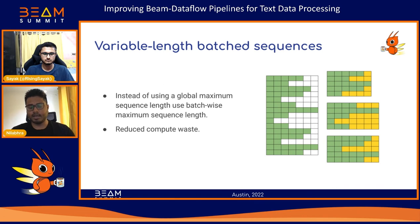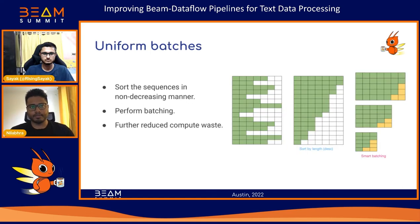We can do even better than that. If we sort the sequences by length before performing batching, the reduction in the proportion of padding tokens per batch is drastic — from 41 padding tokens we are down to only 11 in this case.